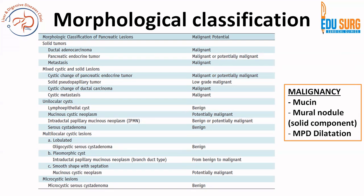Lymphoepithelial cyst has no mucin and is benign. Oligocystic serous cyst adenoma is also benign. For solid tumors, if the word 'solid' appears in the tumor name it is predominantly malignant. The exception is solid pseudopapillary tumor (SPEN), which is low-grade malignant, but metastasis is seen in SPEN in 10% of cases, so it also has malignant potential.